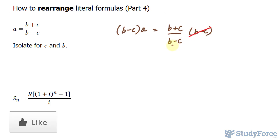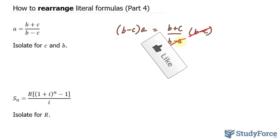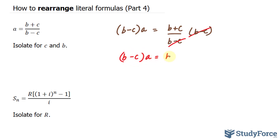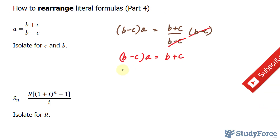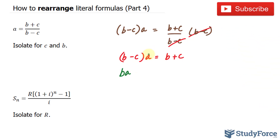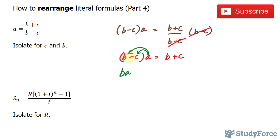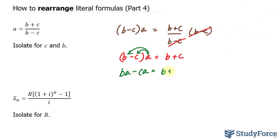Notice what this does — it gets rid of the denominator on the right side, leaving you with only b plus c. So now we have b minus c times a is equal to b plus c. And still, the term that we're looking for is found in two different places. So what I'm going to do is expand the left side, where I have b times a — I'm multiplying a to both of these terms — minus c times a, is equal to b plus c.